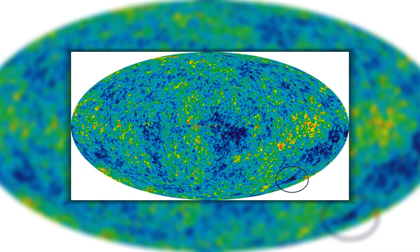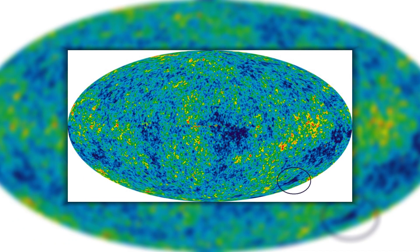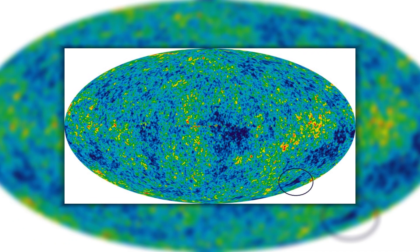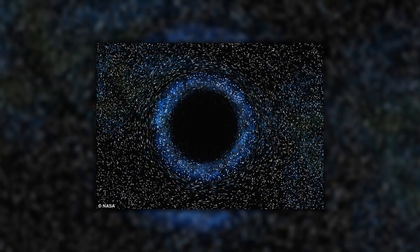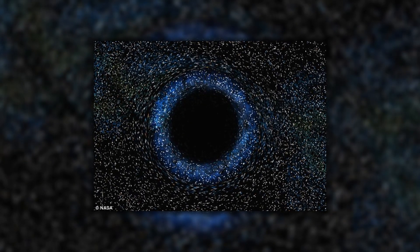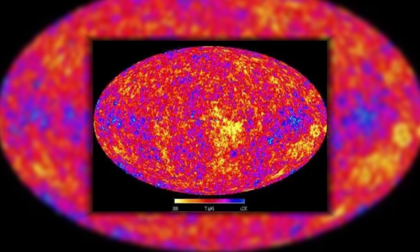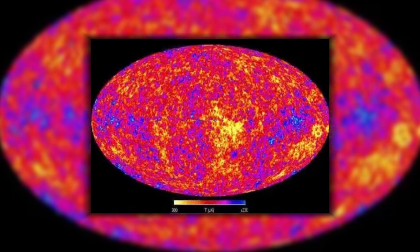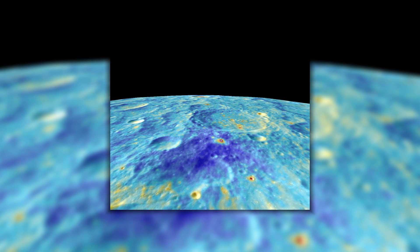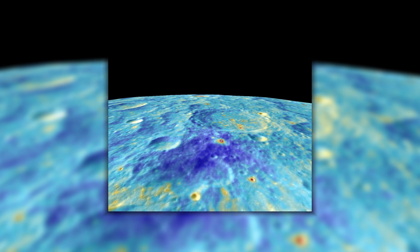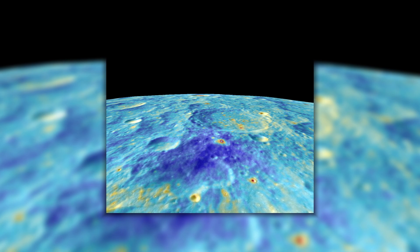There are several different theories about the origin of the Cold Spot. One possibility is that the Cold Spot is caused by a supervoid. A supervoid is a large region of space that is relatively empty of galaxies. A primordial fluctuation is a small variation in the density of the universe that occurred shortly after the Big Bang. Primordial fluctuations are thought to be the seeds of all structures in the universe, including galaxies and clusters of galaxies.